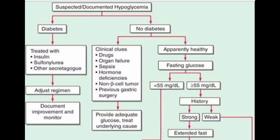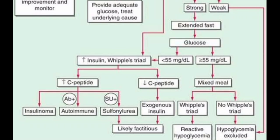In this next picture we explain more about the approach to hypoglycemia. We take the history of apparently well patients, and if the patient's history is suggestive of extended fasting, then we check the glucose levels. If the glucose level is more than 55, we go and check Whipple's triad.